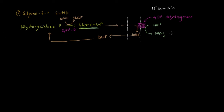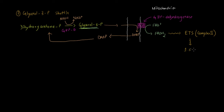Similarly to the previous process, FADH2 goes on to provide electrons to the electron transport system — specifically to Complex 2. NADH always gives electrons to Complex 1 of the electron transport system, and FADH2 gives them to Complex 2. Whenever Complex 2 receives the electron, 1.5 ATP is generated per FADH2 that gives electrons to the electron transport system.